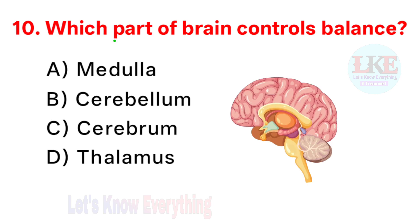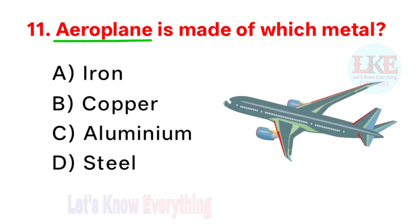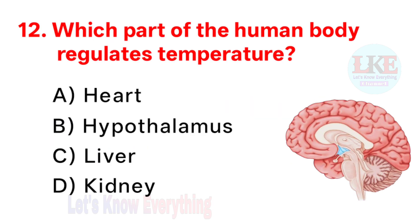Question number 10: which part of the brain controls balance? Right answer option B: cerebellum. Question number 11: aeroplanes are made of which metal? Right answer option C: aluminium. Question number 12: which part of the human body regulates temperature? Right answer option B: hypothalamus.